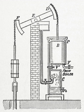A beam engine is a type of steam engine where a pivoted overhead beam is used to apply the force from a vertical piston to a vertical connecting rod. This configuration, with the engine directly driving a pump, was first used by Thomas Newcomen around 1705 to remove water from mines in Cornwall.